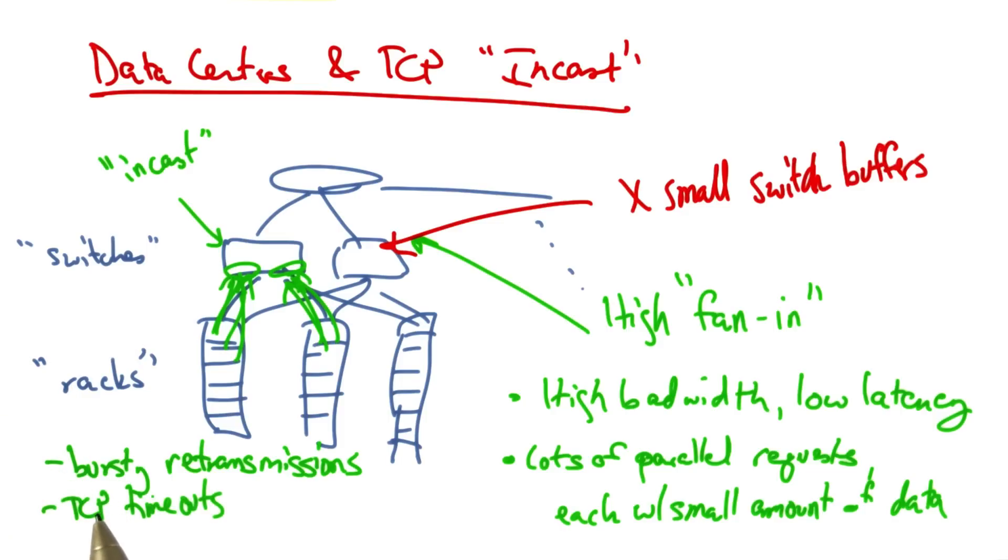The TCP timeouts can last hundreds of milliseconds, but the round trip time in a data center network is typically less than a millisecond, often just hundreds of microseconds. Because the round trip times are so much less than TCP timeouts, the senders will have to wait for the TCP timeout before they retransmit. An application throughput can be reduced by as much as 90% as a result of link idle time.